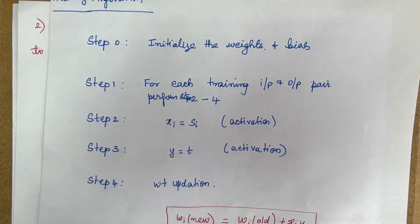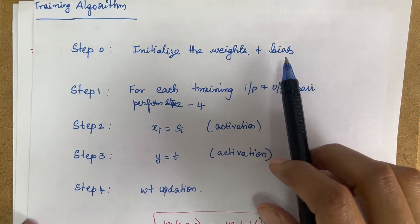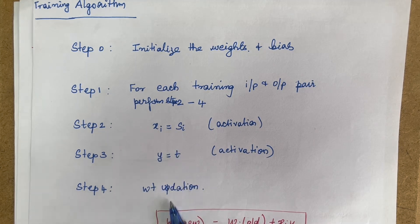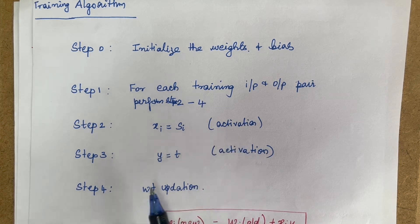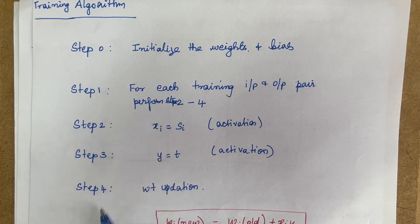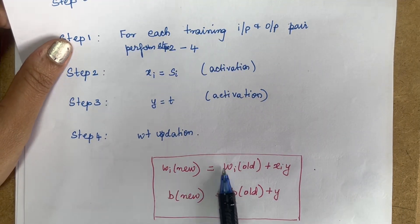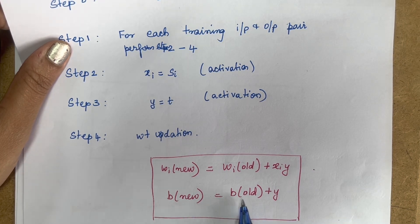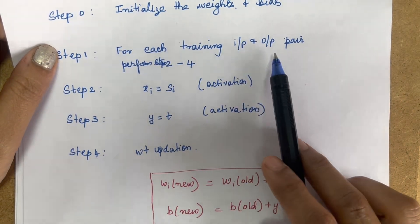The training algorithm goes like this: first we initialize the weights and bias — initially all weights and bias are set to zero or some random value. For each input-output pair, we perform steps 2 to 4. Step 2: initialize the input units xi = si. Step 3: set the output units y = t. Step 4: update the weights — new weight = old weight + xi × y, and new bias = old bias + y.